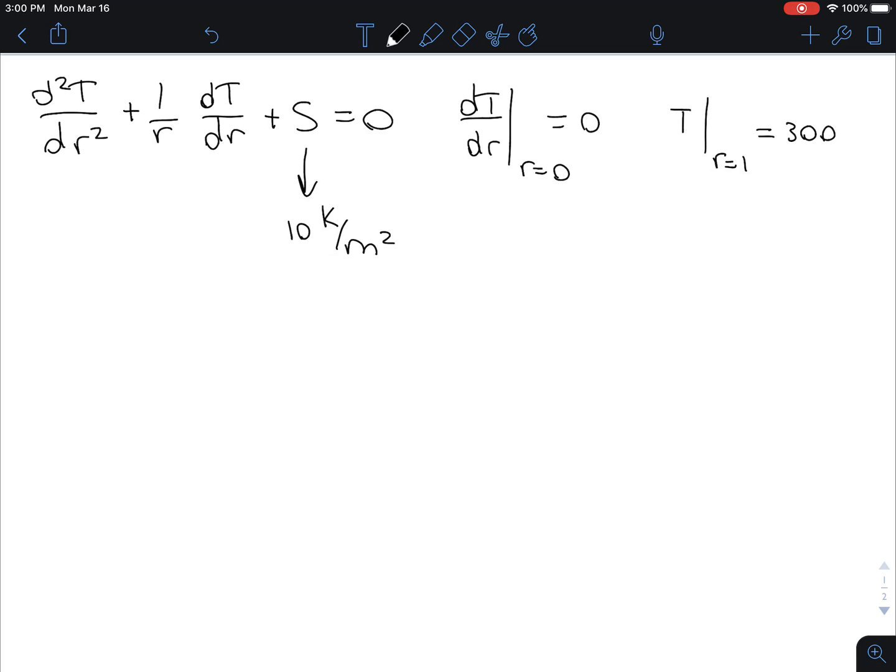Perhaps there is current flowing through the rod. And it also asks us to employ Runge-Kutta fourth-order and the false position method. Now,